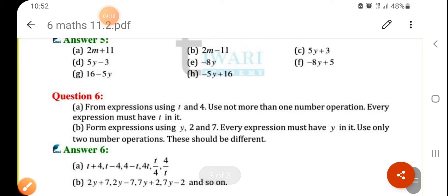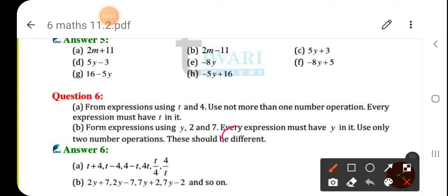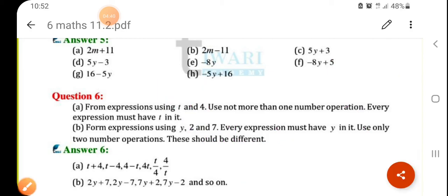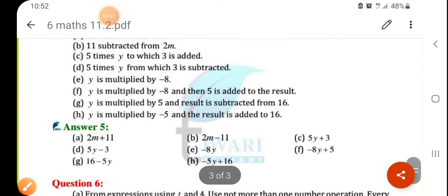Remaining also you can make 7 upon Y plus 2, 2 upon Y minus 7. In this way also you can make 7 into Y divide by 2. These are also the expressions that you can make.